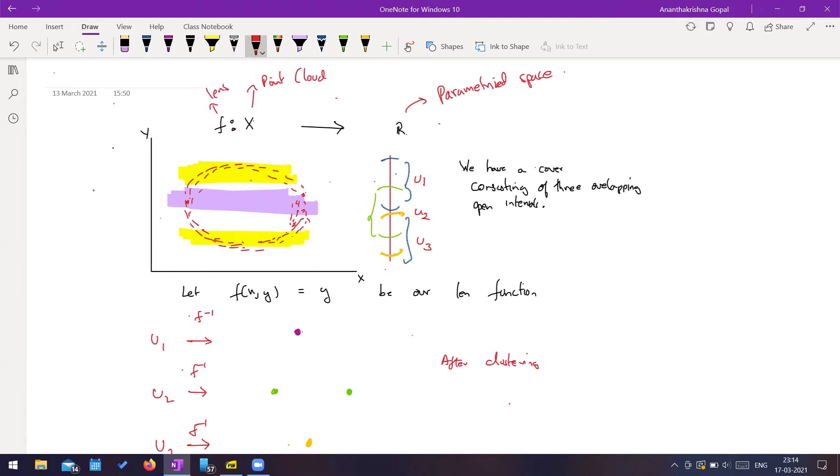Okay, so now I have considered an open cover. I'm not explicitly writing down what u1, u2 and u3 are because I have not written anything over here explicitly. But I'm considering three open covers which are overlapping by roughly 50%. So you can see one in blue, one in green and one in yellow.